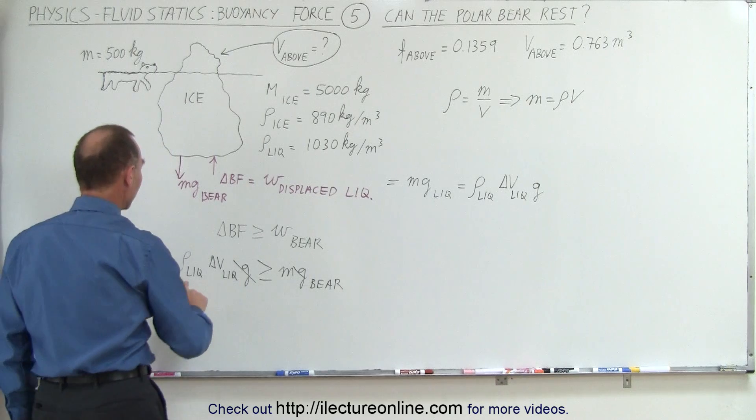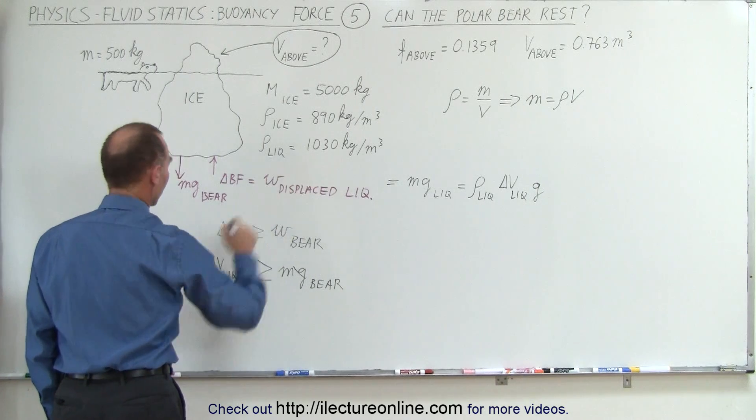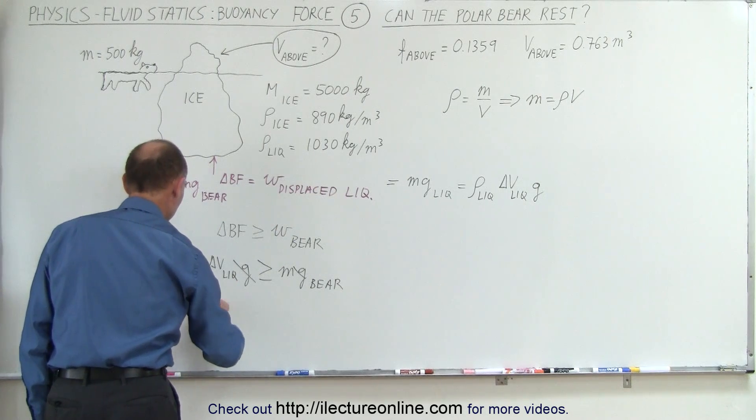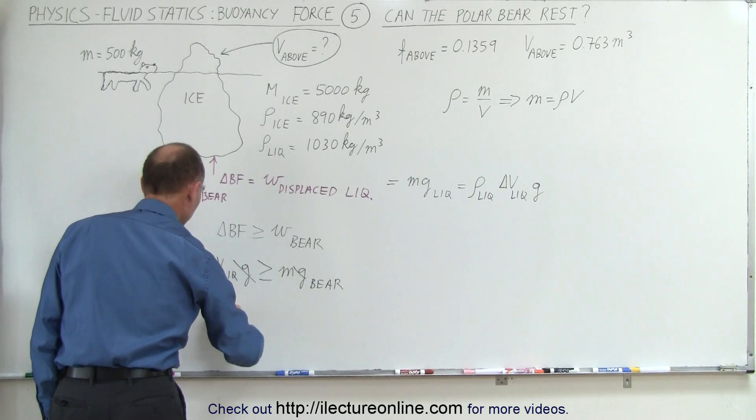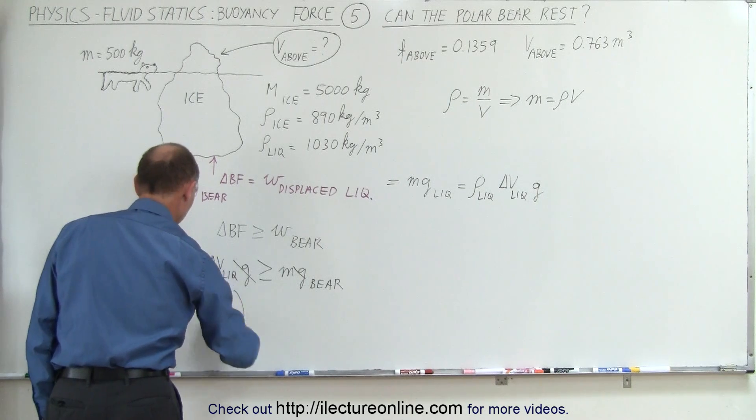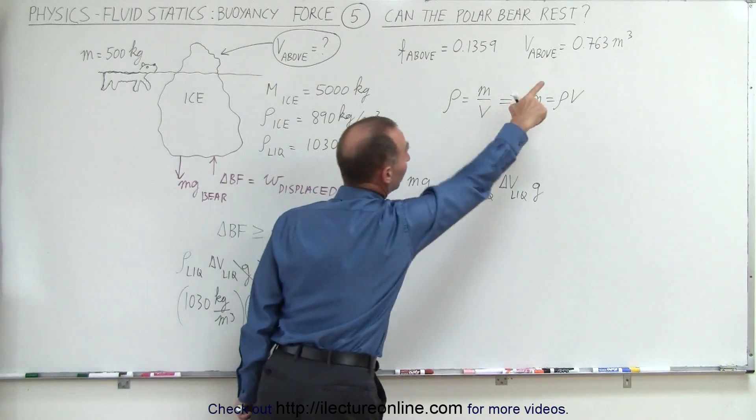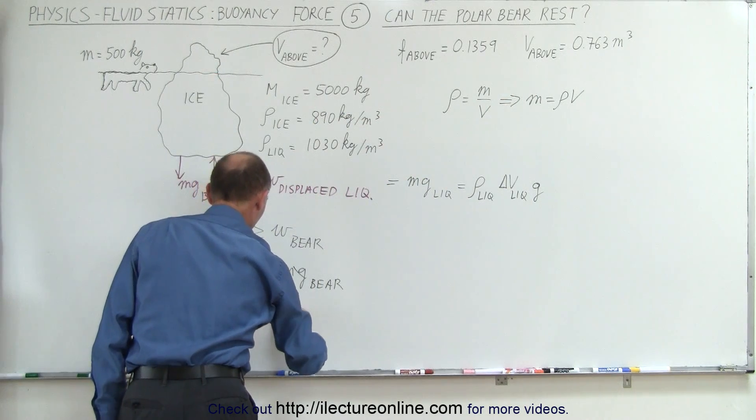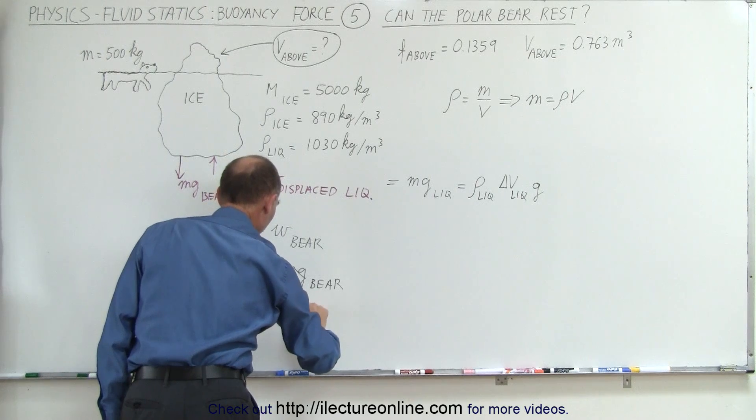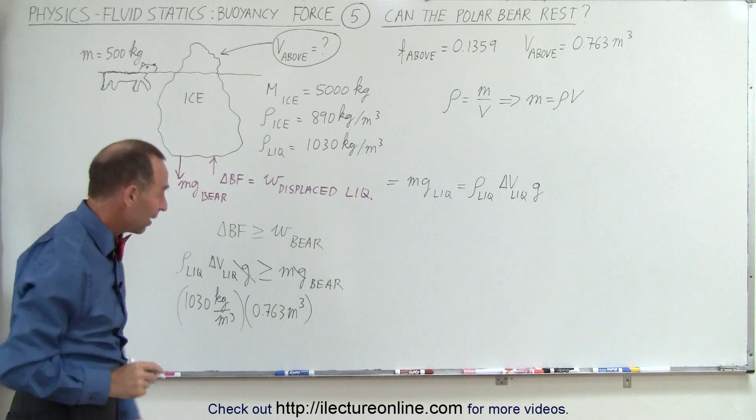The density of the liquid, well in this case it was 1030 kilograms per cubic meter, and the additional volume which we calculated in the previous video, 0.763 cubic meters. And if you want to know how to do that, simply go to the previous video and you'll see how.